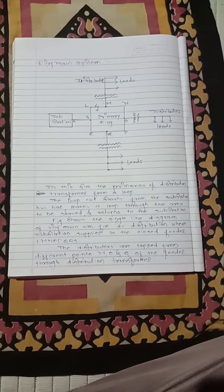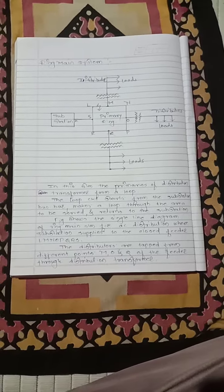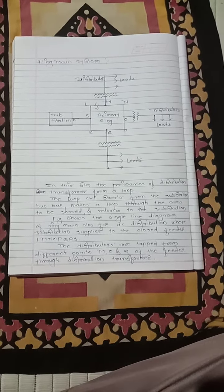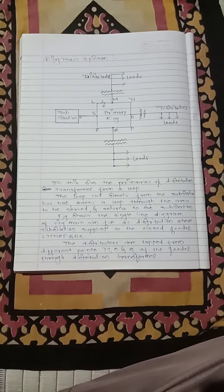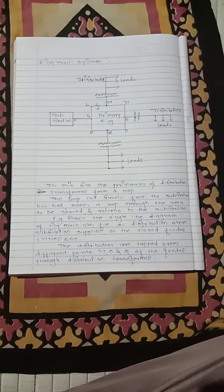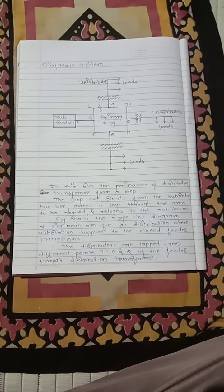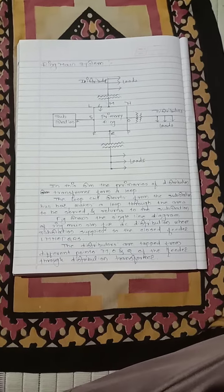The advantages of the ring main system are: it has less voltage fluctuation at the consumer end; second, the system is reliable because each distributor is fed via two feeders; third, in the event of a fault on any section of the feeder, the continuity of supply is maintained.